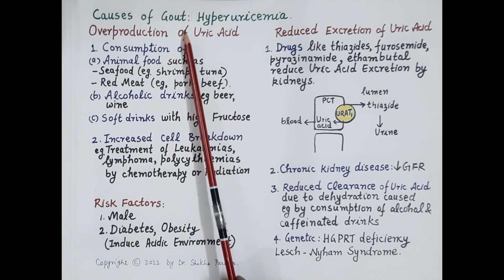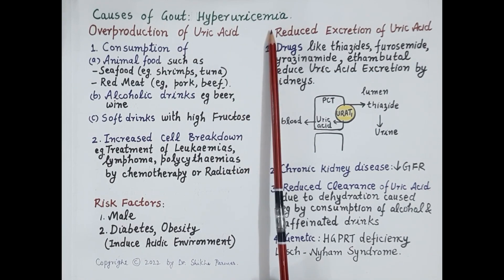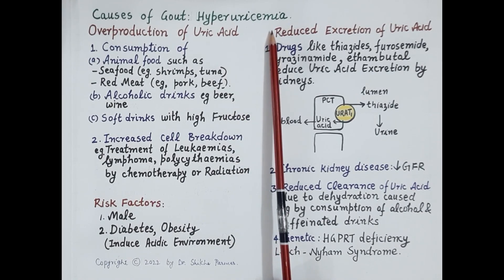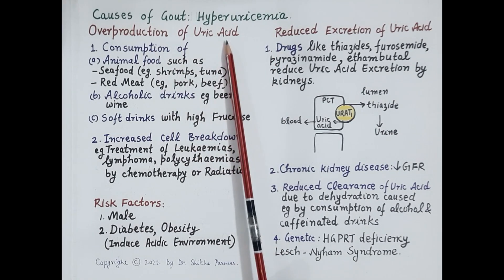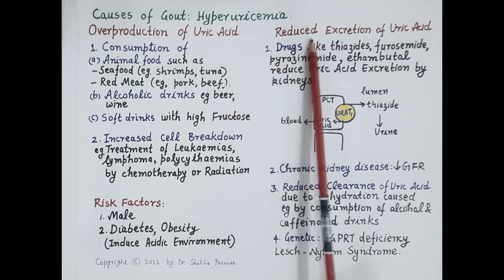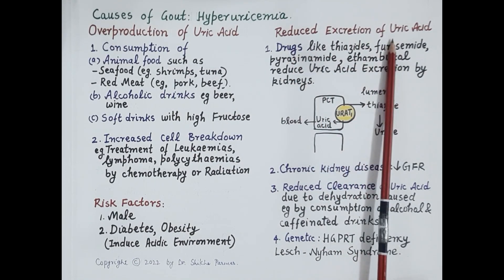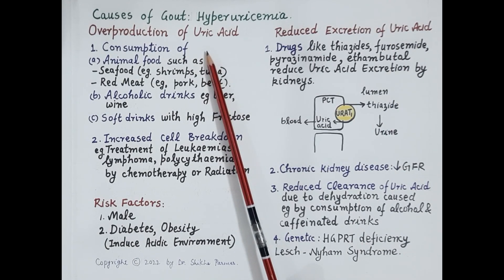Now let us study the causes of gout. The main cause is hyperuricemia — increased concentration of uric acid in the blood — produced by two main reasons: either overproduction of uric acid or reduced excretion of uric acid. Reduced excretion accounts for hyperuricemia in 90% of cases, while overproduction is responsible in only 10% of cases.